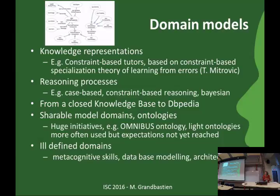As there are more and more knowledge representation needs, something wise could be to share domain models in the form of ontologies. There have been huge initiatives—the big one is the Omnibus Ontology, and you can see Jacqueline, who is a co-author. But in fact, it has not been used a lot. What people have used or shared is light ontologies—more organized vocabularies. On that point, the sharing of knowledge representation: expectations were not reached and a lot remains to be done.